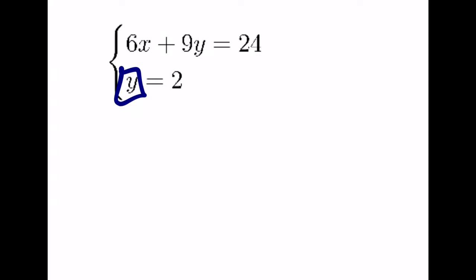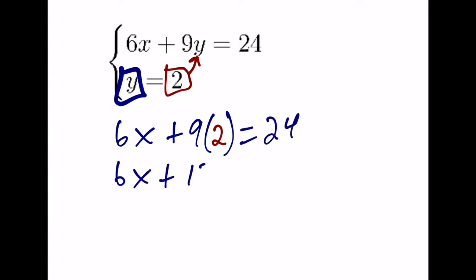So what we can do is take what y is equal to and plug it into the other equation. So we write this as 6x plus 9 multiplied by 2 is equal to 24. And when we multiply 9 times 2, we get 18. And we're at a two-step equation.